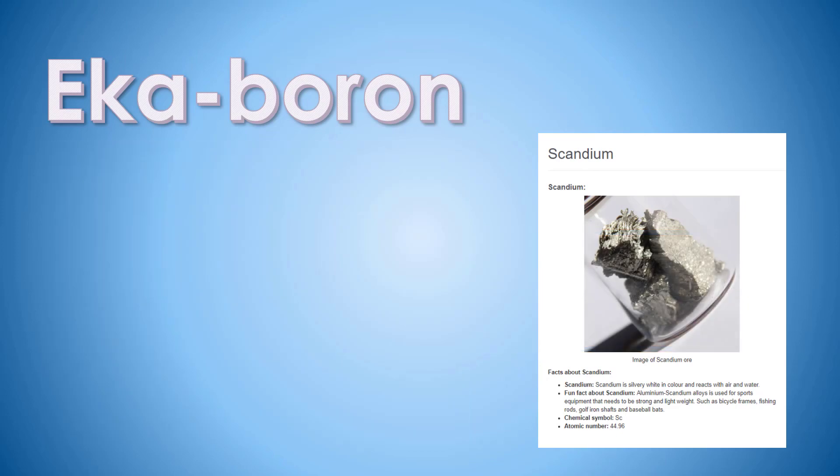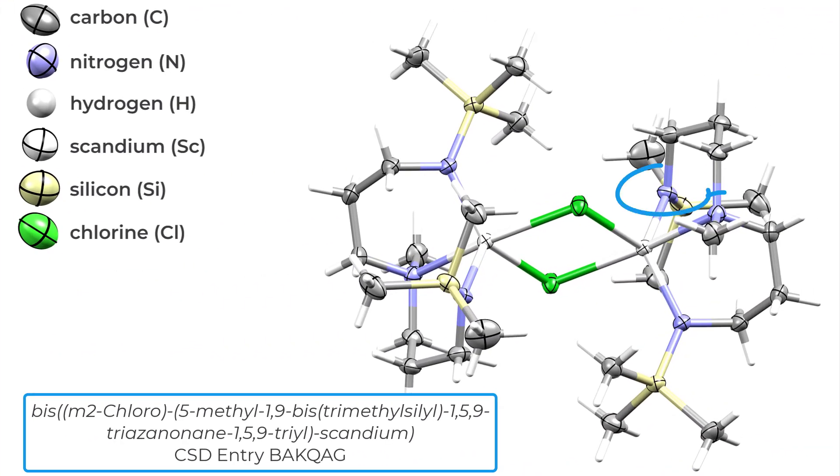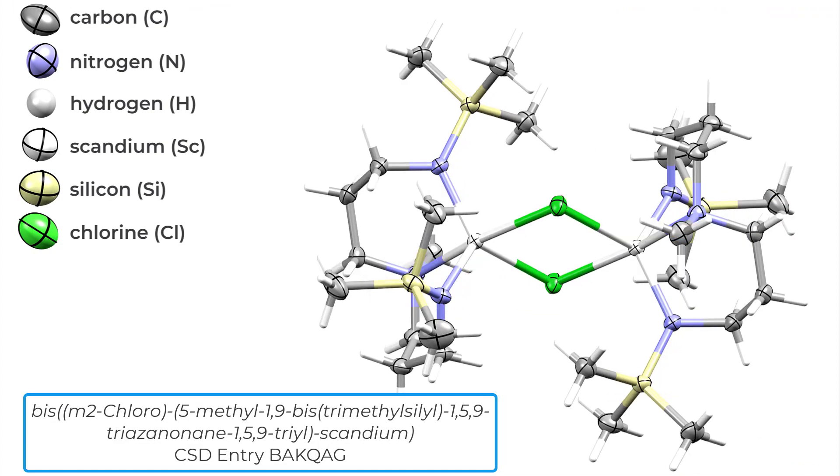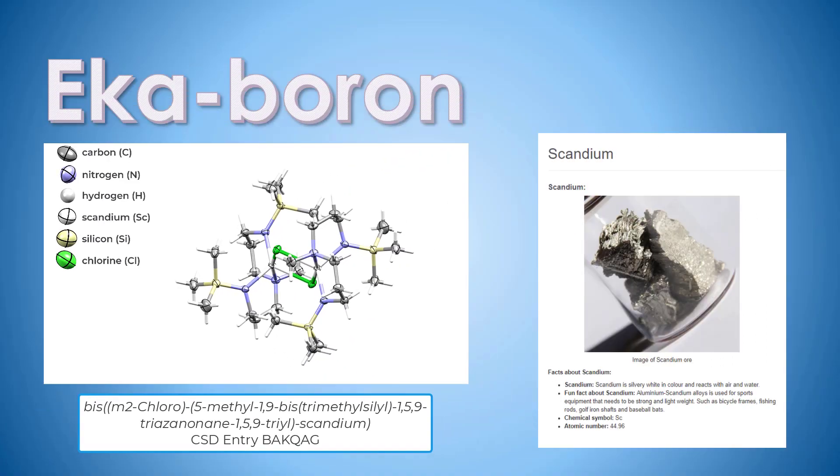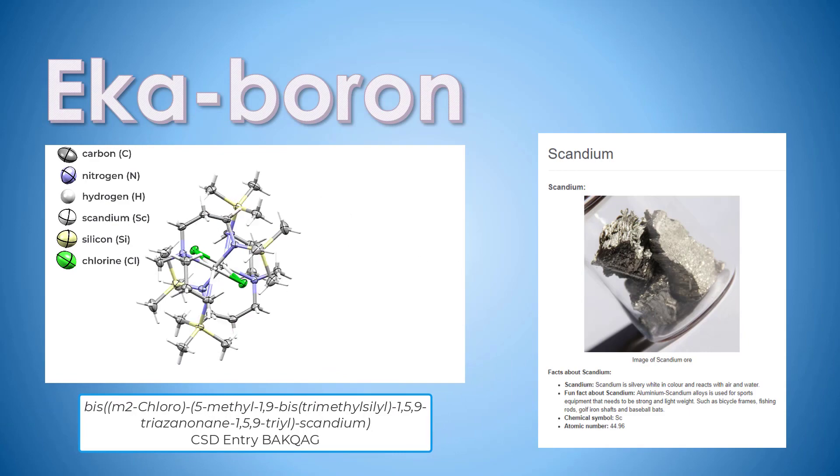In most cases, scandium has a coordination number of three, like boron, which means it's surrounded by three things. However, in some structures it can be surrounded by five things instead, as the species surrounding the scandium are able to donate their electrons instead of needing any from the scandium itself.